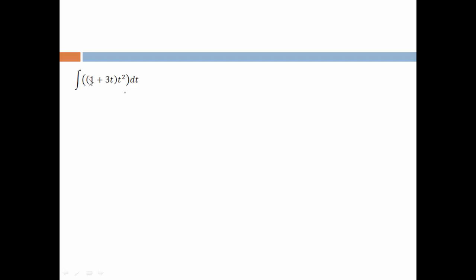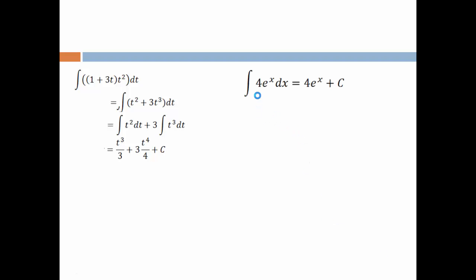Then: ∫(1 + 3t)·t² dt. When you have something in multiplication, first simplify: (1 + 3t)·t² = t² + 3t³. So it becomes ∫t² dt + 3·∫t³ dt = t³/3 + 3·(t⁴/4) + c. The final one: ∫4e^x dx = 4e^x + c.